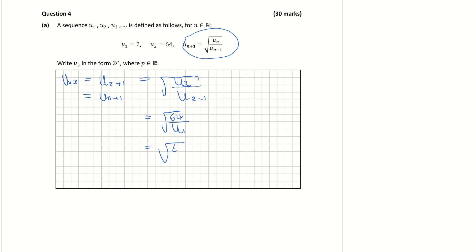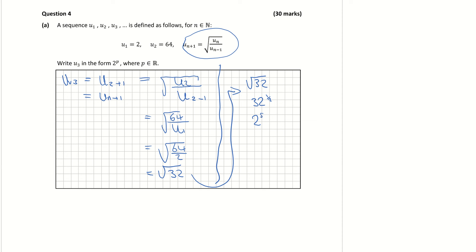The value of u1 is 2 from the question, giving me the square root of 32. The question wants it as a power, so: square root of 32 is the same as 32 to the power of a half. Since 2 to the power of 5 equals 32, I can write it as 2 to the power of 5, to the power of a half. Multiplying the indices gives 2 to the power of 5 over 2.